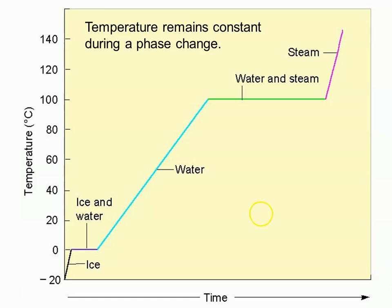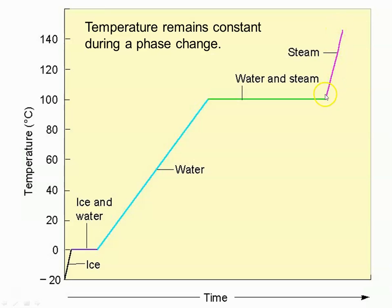That is all for today. This is Ms. Augustine. In the next chapter, Chapter 11, we're going to actually do some calculations — things like how much energy it takes to melt ice, how much energy is released when water freezes, how much energy it takes to take water from zero to 100 degrees, how much energy it takes to turn water into steam, and how much energy it takes to heat up steam as well. This is Ms. Augustine signing off.